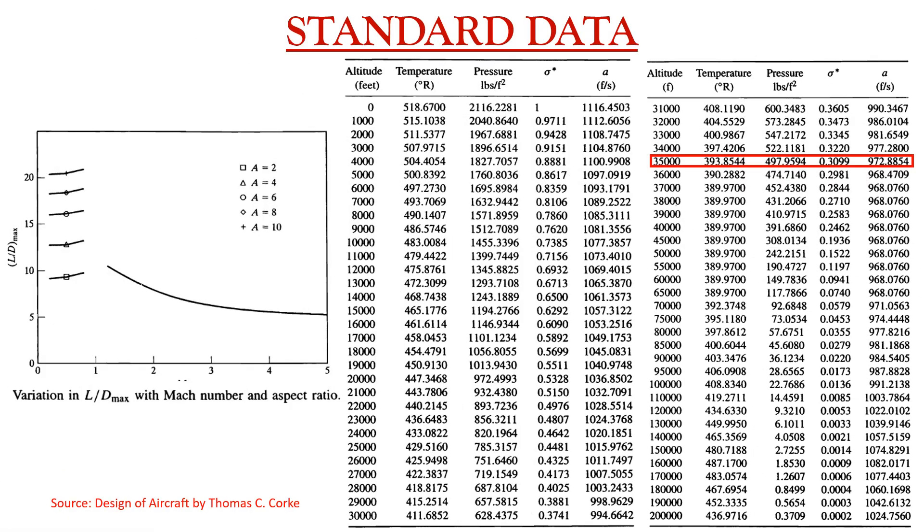In this slide we represent the standard atmospheric data and a plot showing lift by drag max with respect to Mach number variation at different aspect ratios. Depending on the L by D max value, we can choose the respective aspect ratio. Since we had our L by D max value something around 14.4, the appropriate aspect ratio was obtained to be A equals to 6.